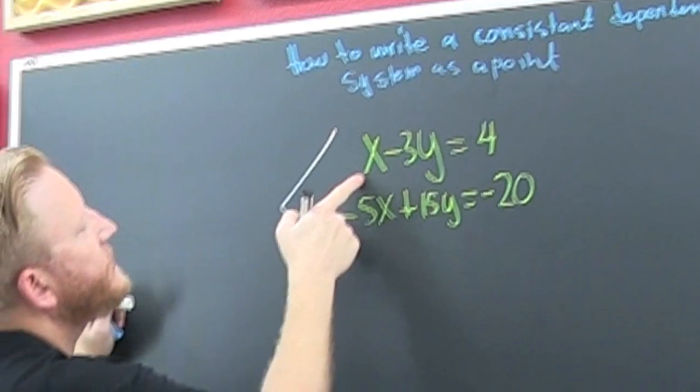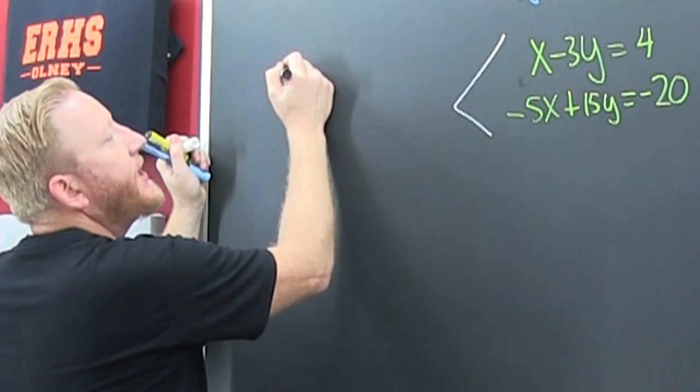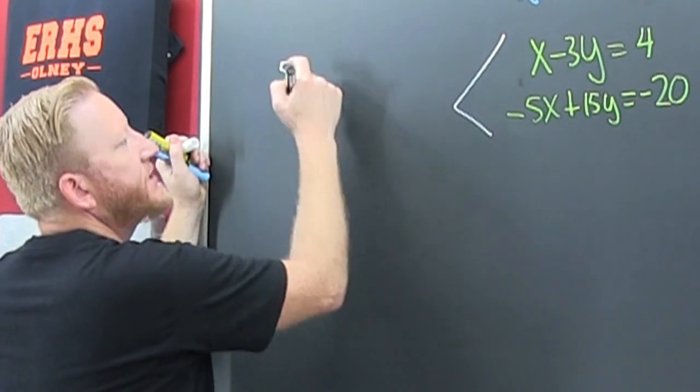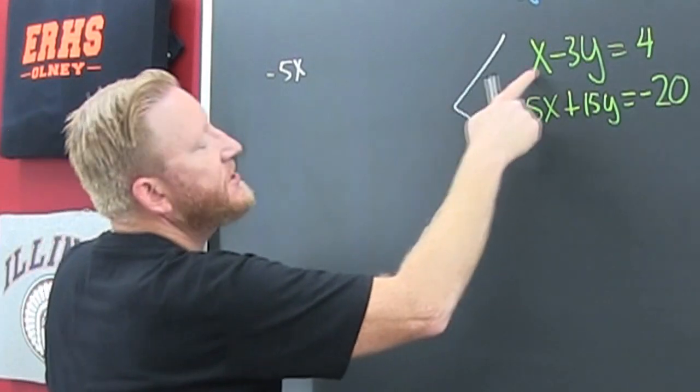Why? What if I multiplied this one by minus five? When I say this one, I mean the top one. So then that's minus 5x, minus 5 times minus 3 is positive 15y.